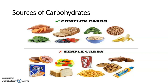Comparing the two sources: complex carbs are starchy, full of fibers, and need more time to be digested. Simple carbs are found in sweet foods and need less time to be digested. For example, when chewing white bread, we eventually taste a sweet flavor — this is the result of digestion of the bread starting inside our mouth.